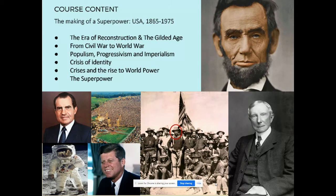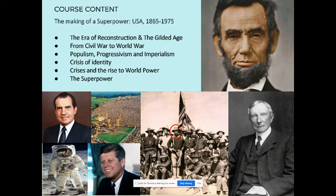In the American part of the course, we're sort of sandwiched between two of the biggest wars in American history: 1865, the end of the Civil War, and 1975, the end of the Vietnam War. We begin with a period of Reconstruction following that Civil War, the freedom of the slaves, the 13th, 14th, and 15th amendments to the Constitution to try and guarantee civil liberties, and we'll look at how and why that perhaps failed.